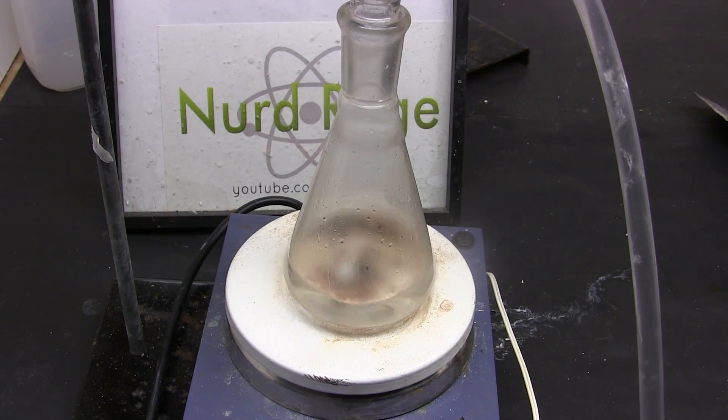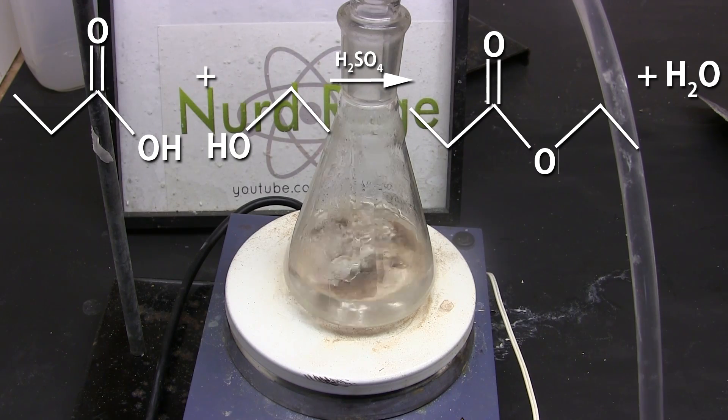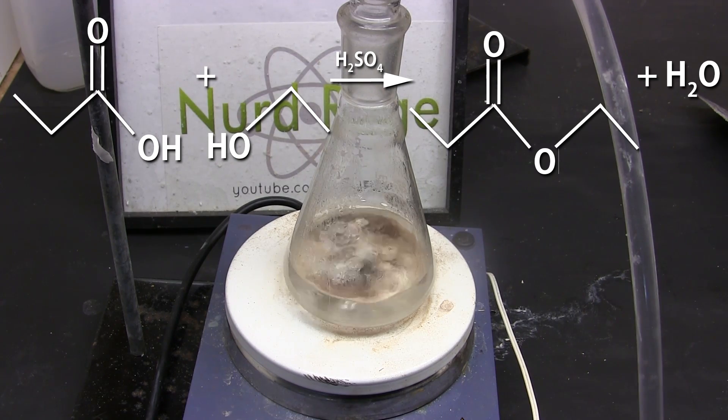Gently start refluxing the mixture. What's happening is we're reacting the propionic acid with ethanol to form ethylpropionate and water. The sulfuric acid acts as a catalyst.